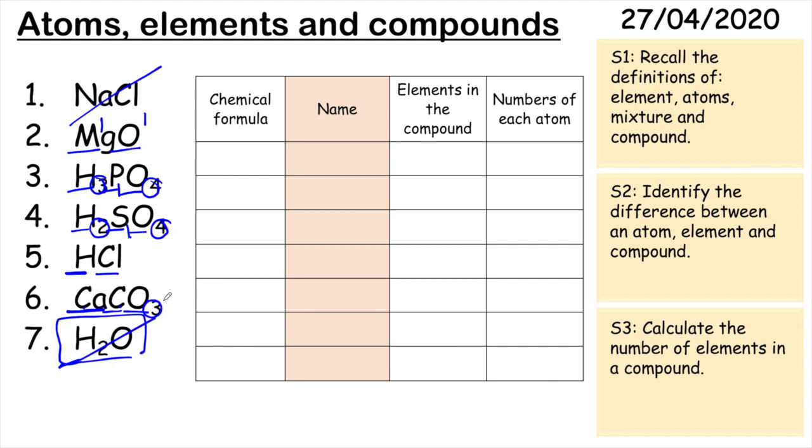Hopefully that's clear and you understand now how to identify elements in a compound. You are able to count the number of atoms of each element in a compound. And you understand the definitions, atom, element and compound. I'm going to leave you now with some questions to have a go at. And then check back in for the next video where we'll go through mixtures and we'll look at compounds in a little more detail.